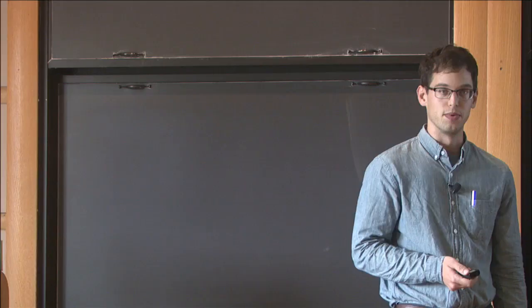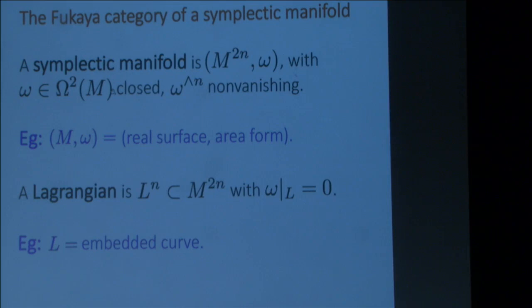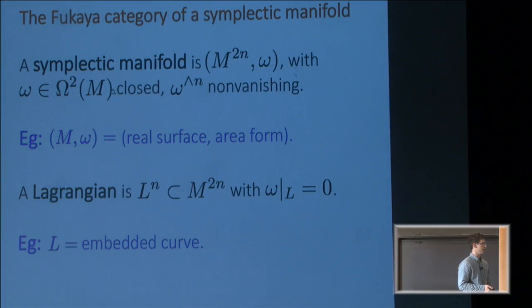When n equals 1, that's just a real surface with a volume form or area form. There is a special kind of submanifold called a Lagrangian, an n-dimensional submanifold on which the symplectic form vanishes. So when n equals 1, that's just a curve.